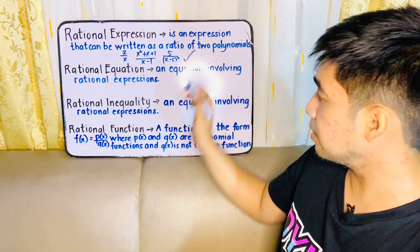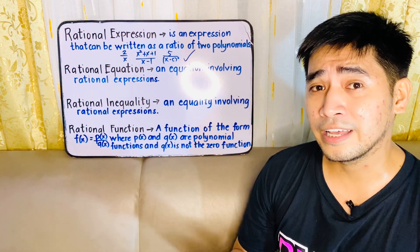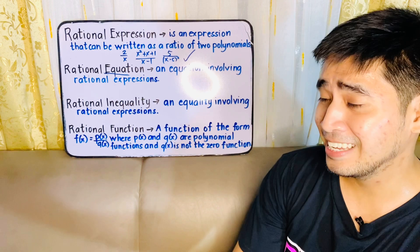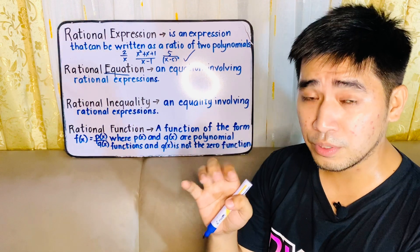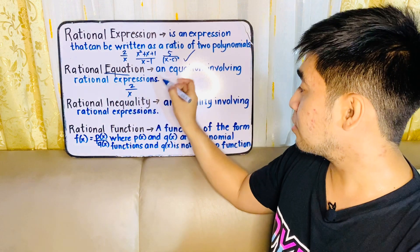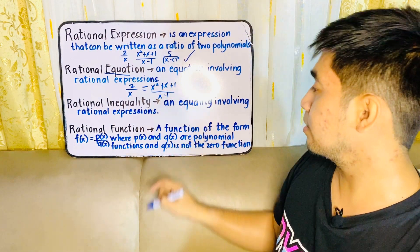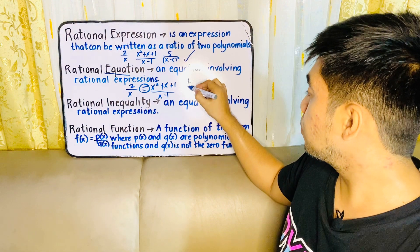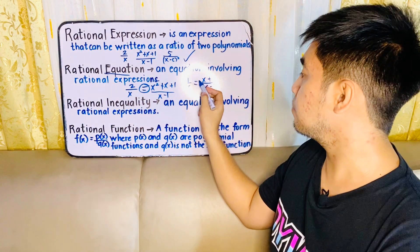Remember that. When we say rational equation, madidecipher natin yung word na 'equal' from the word equation. Therefore, if it is an equation, there is an equal sign. The definition of rational equation is an equation involving rational expressions. For example, 2 over x is equal to x squared plus x plus 1 over x minus 1 — this becomes a rational equation because of the equal sign. Another example: 1 over x is equal to x plus 1 over x minus 1 — rational equation because of the equal sign.